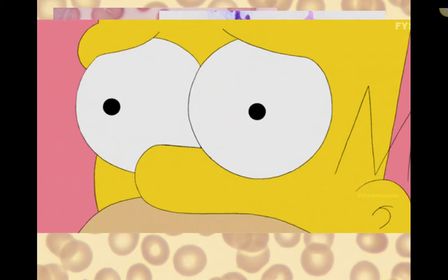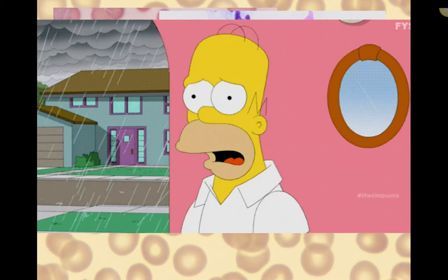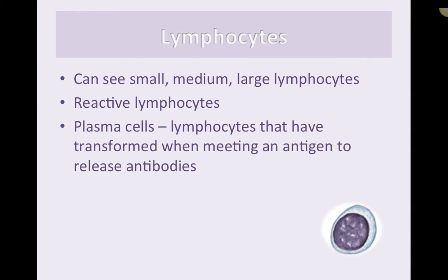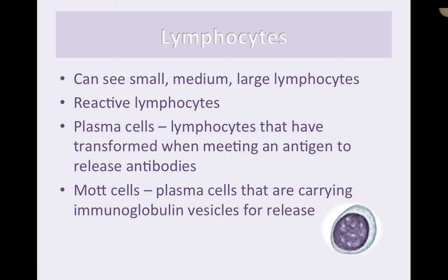Don't get overwhelmed — just take your time, look at lots of slides, and you'll get used to degenerative neutrophils. Lymphocytes can be seen small, medium, and large. We have reactive lymphocytes in inflammation, and we also have plasma cells — lymphocytes that have transformed when meeting an antigen to release antibodies. Plasma cells relate to immune response, and mott cells likewise represent immune response.